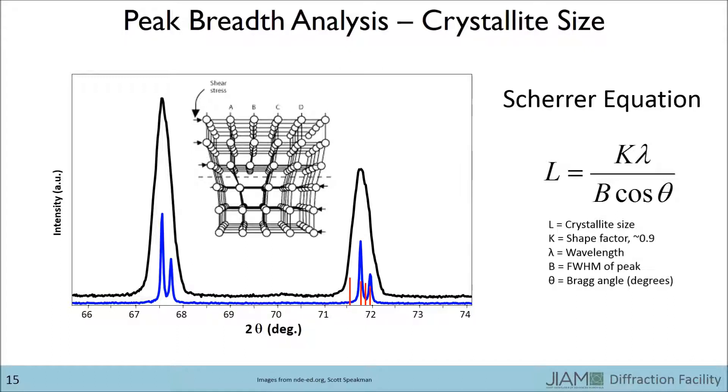Recall that every d-spacing corresponds to a particular value of 2θ that brings about a peak. If the d-spacing of a particular plane now has a variety of values larger and smaller than the average, this means that the angles larger and smaller than the Bragg angle will also bring about some sort of intensity, thereby broadening the peak.